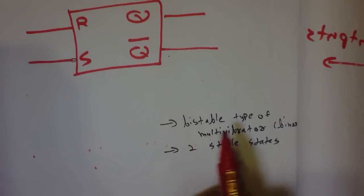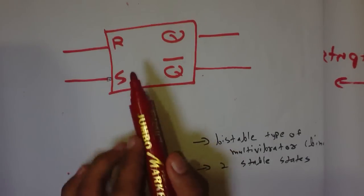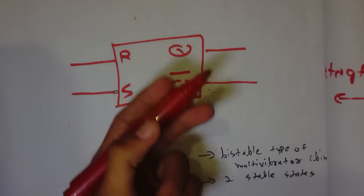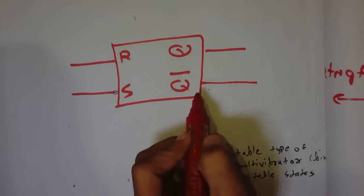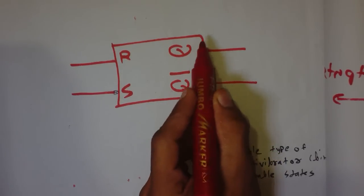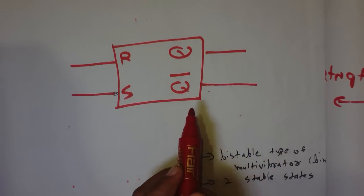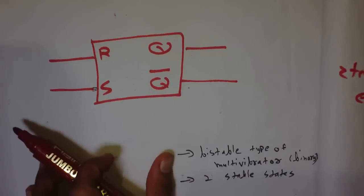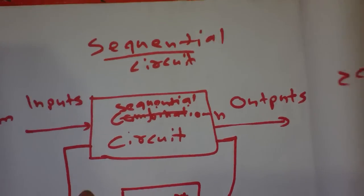A flip-flop circuit is a bistable type of multivibrator, also known as a binary element. It has two stable states. It has two outputs — when Q is 0, Q-bar is 1; and when Q is 1, Q-bar is 0. Both are always complementary to each other. This is the introduction to flip-flops — it is a sequential circuit.